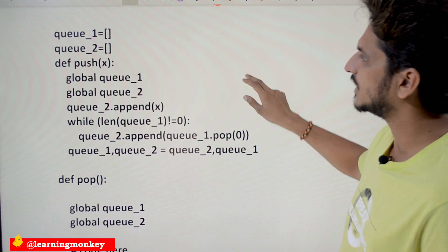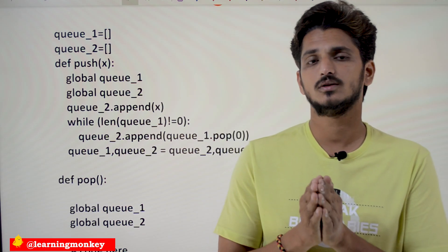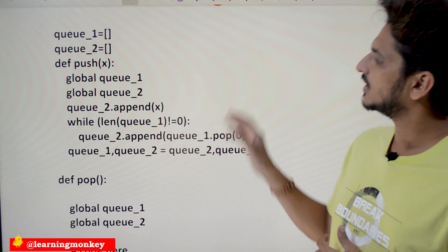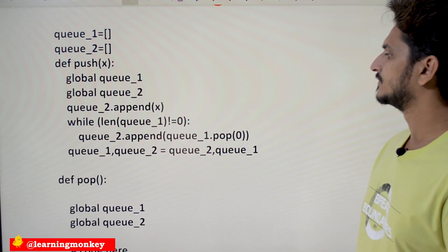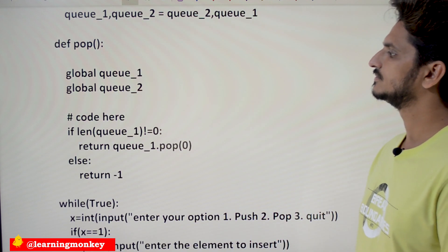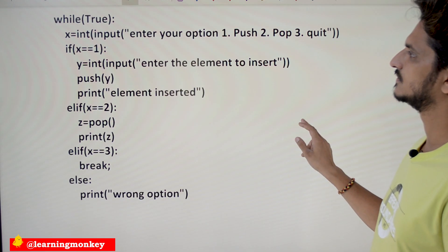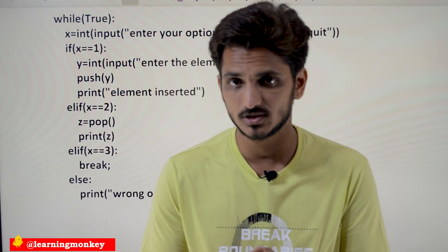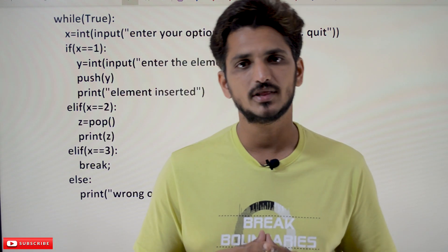Coming to the coding part: our suggestion is, after listening to the logic, try to write the code on your own. The coding is also present on our website learningmonkey.in — you can use it, but try to solve it on your own first, then check the solution. Hope you understand this example. If you have any questions, please post them in the comment section below. Thanks for watching — please subscribe to our channel and press the bell icon for the latest updates. Thank you.